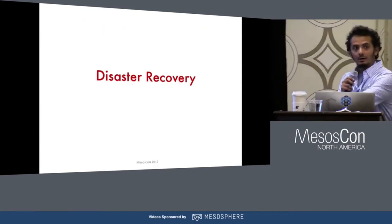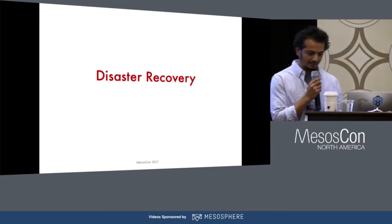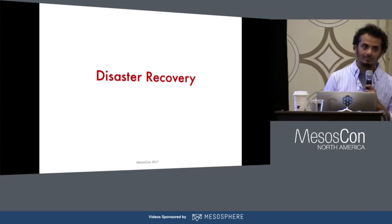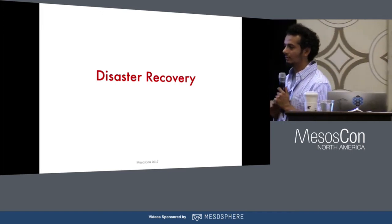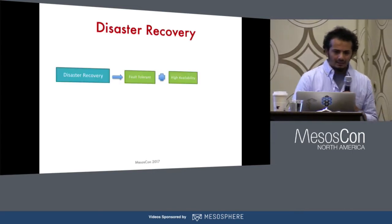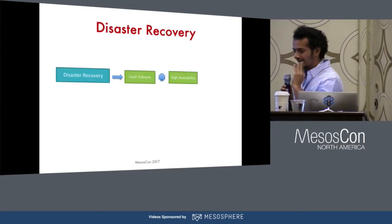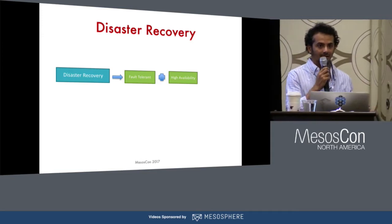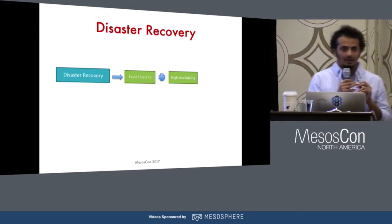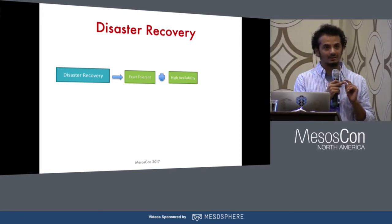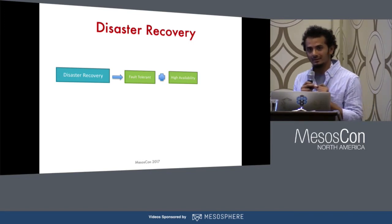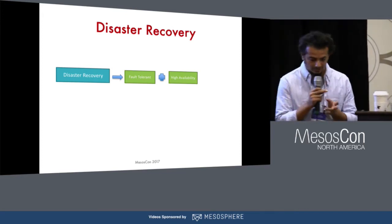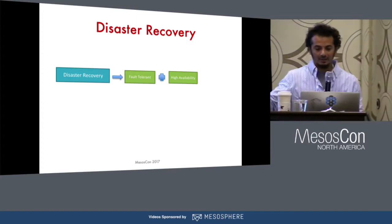Let's look more at disaster recovery and how we can tackle it. Before that, let's look at what DR is, how things happen in traditional and cloud environments, and how Mesos is going to help us. When you look at disaster recovery, it's basically a list of processes or policies to bring your system back up after any catastrophic event. It all boils down to how fault-tolerant and how highly available your application is. If your application is highly fault-tolerant, you may not have to worry as much about DR — but it depends on the underlying platform.